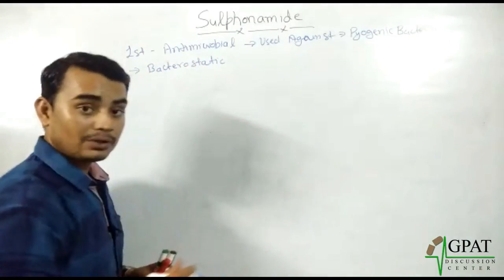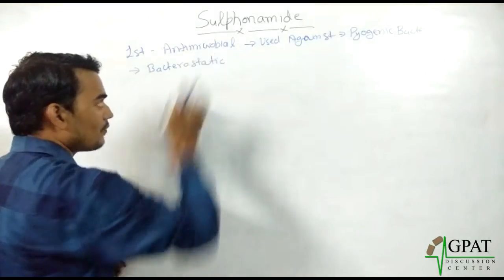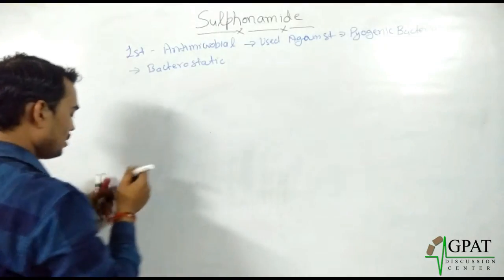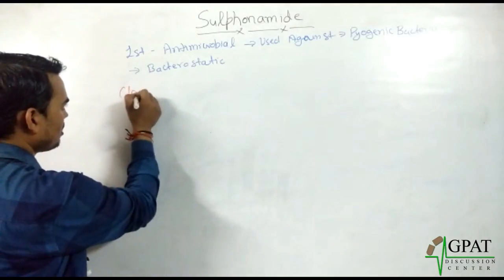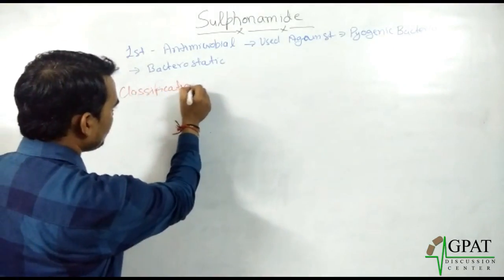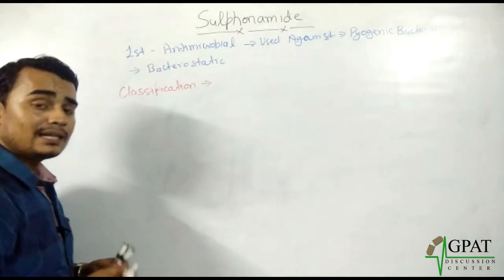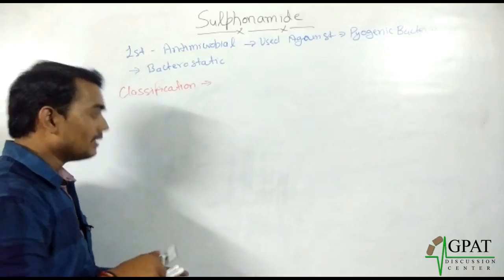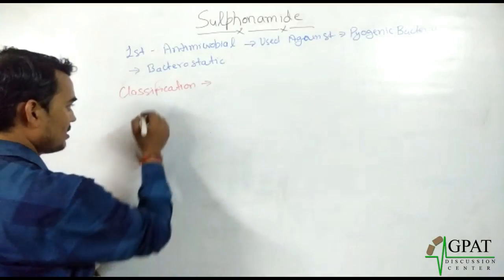Sulfonamide is bacteriostatic in nature because it acts as an antimetabolite. Now, if we discuss the classification of sulfonamide, it is classified on the basis of half-life and is sub-classified into four classes.